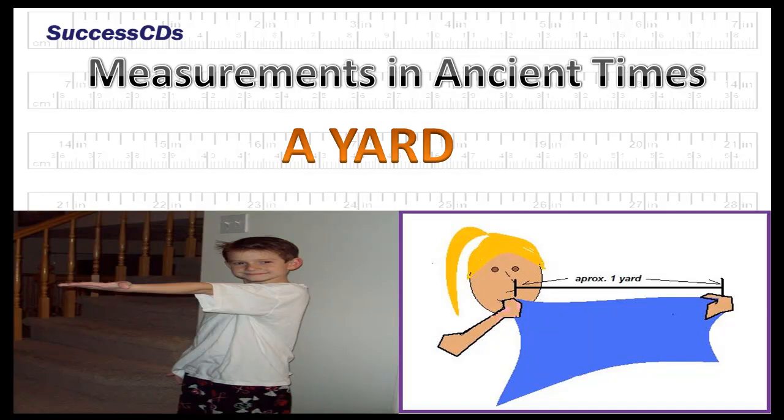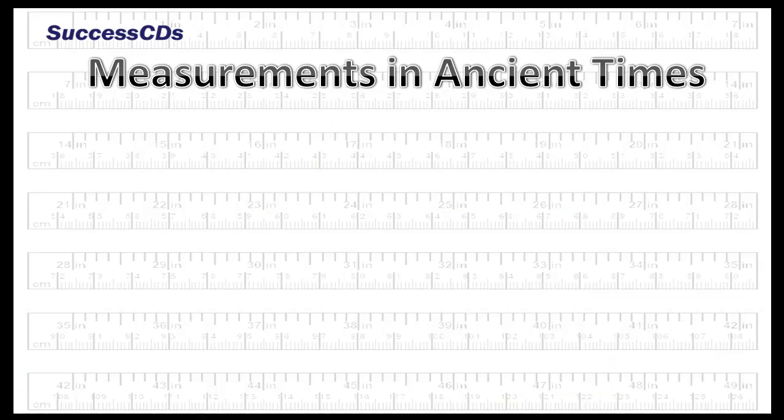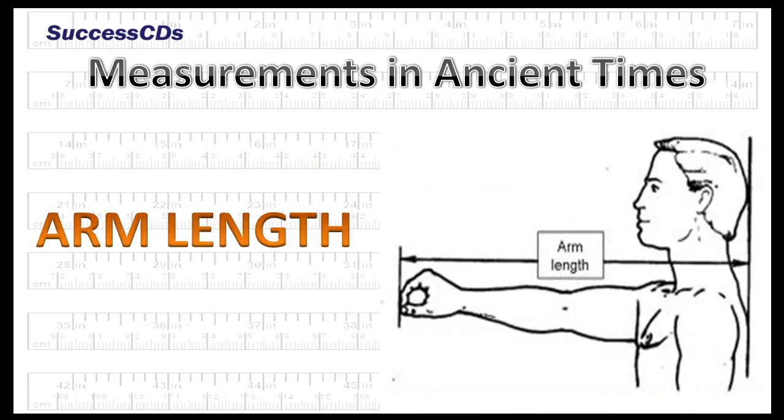Yard: Distance between the end of the outstretched arm and the chin. Arm length: It is the length between the shoulder and the middle finger.